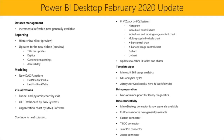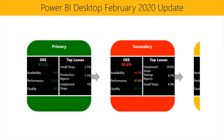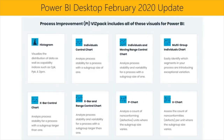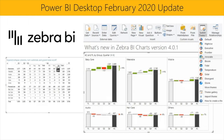Moving on to our visualization section — we have several new custom visuals now available on AppSource and a couple of updates to existing visuals. New visuals include: Funnel and Pyramid Chart by Xviz, OEE Dashboard by 3AG Systems, Organization Chart by MAQ Software, and the PI VisPack by PQ Systems, which includes Histogram, Individuals Control Chart, Individuals and Moving Range Control Chart, Multi-Group Individuals Chart, X-Bar Control Chart, X-Bar and Range Control Chart, P-Chart, and U-Chart.